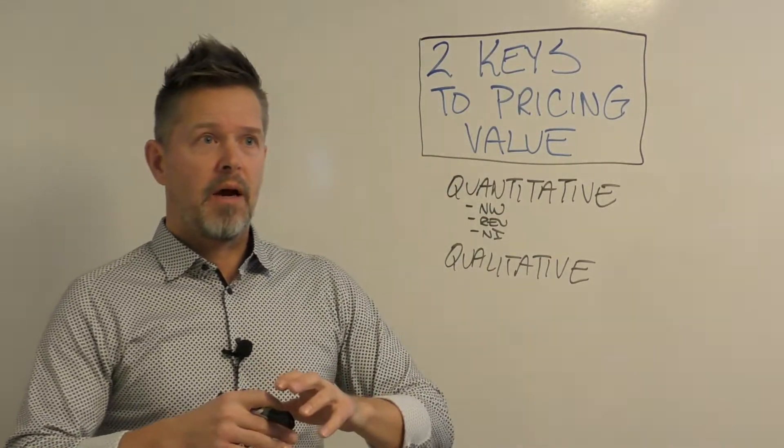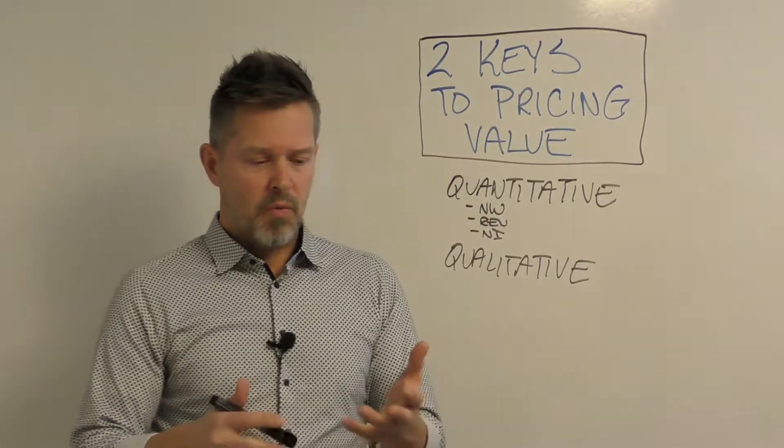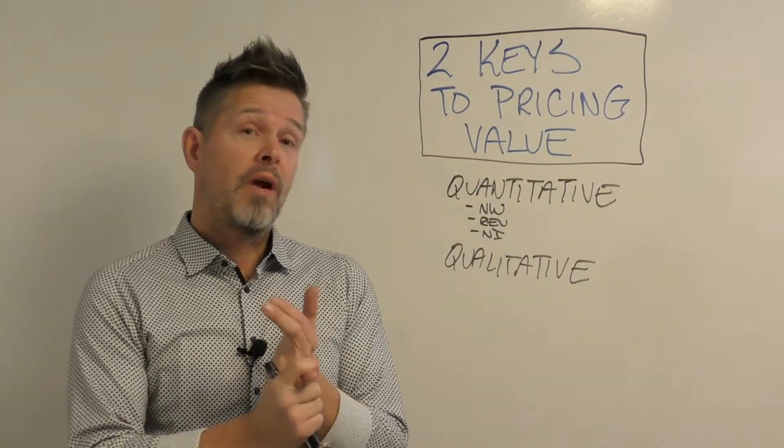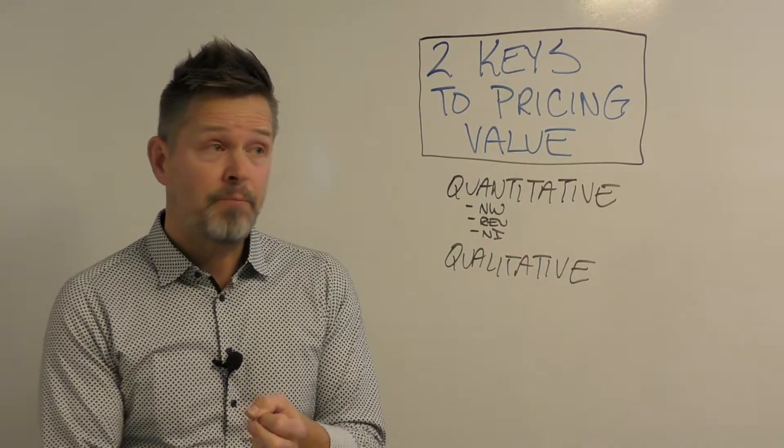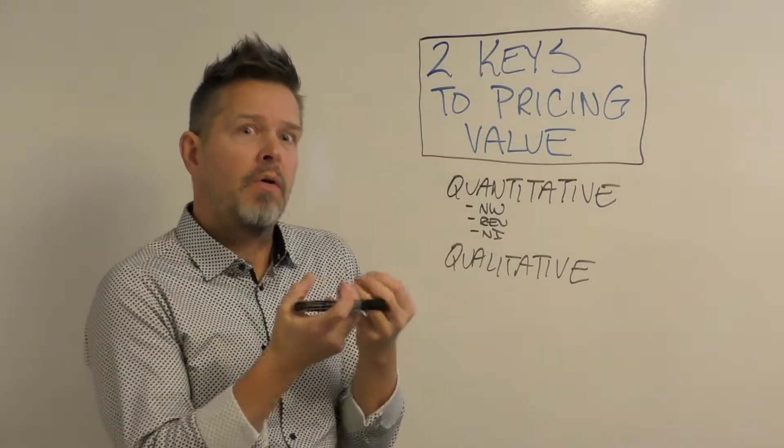Someone that's making a net income of say ten million dollars a year versus a hundred thousand dollars a year, number one they're going to have more bandwidth to pay you a higher price, they're going to have more impact from the advice that you're giving them. And so that's the quantitative side. We talk about the actual numbers, which is what accountants are great at.